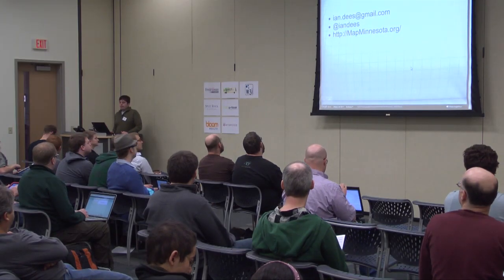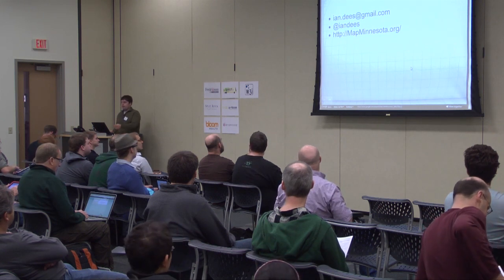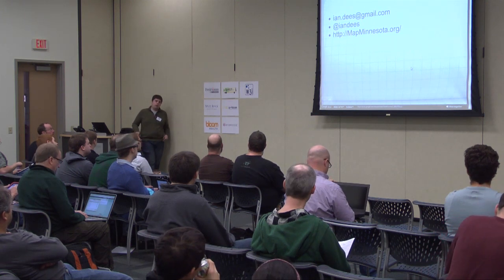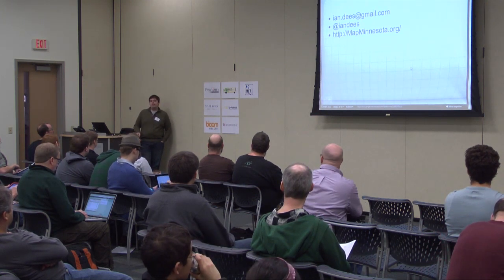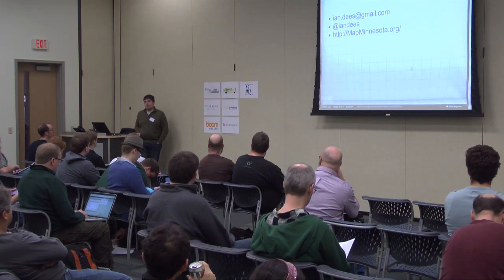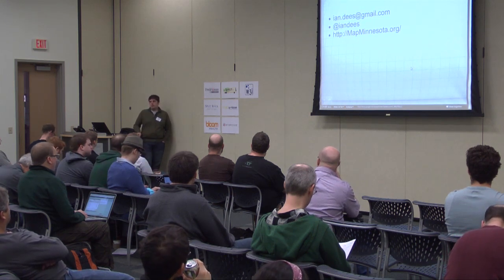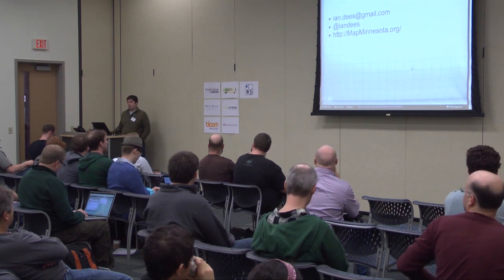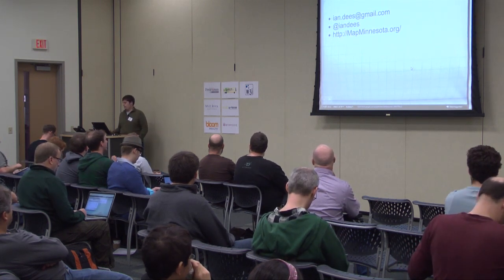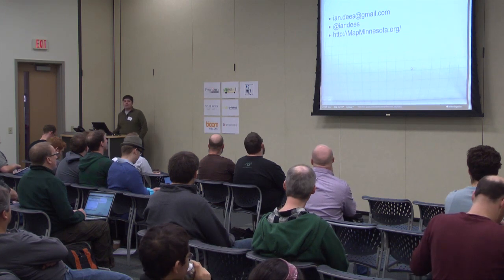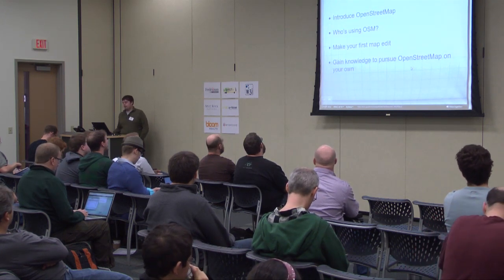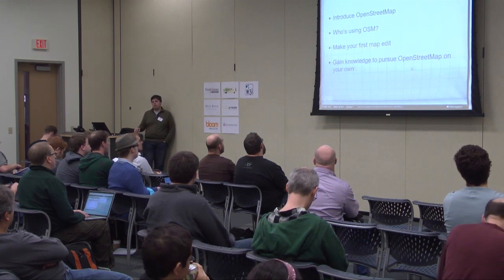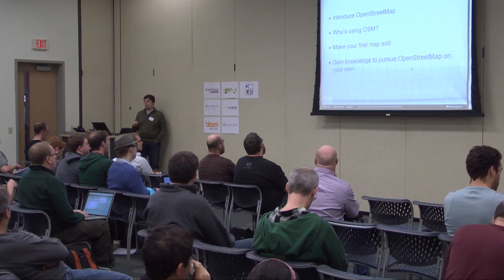Who am I? I am Ian Dees. I have an email address and a Twitter account right there. I also run an organization called MapMinnesota, which does infrequent mapping parties using OpenStreetMap. We haven't done one in a while — I've been out of town. But I encourage you to go to MapMinnesota.org and check it out. There's a mailing list link on the right side that you could sign up for.